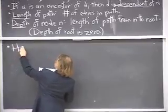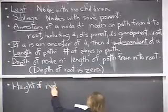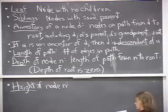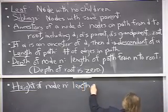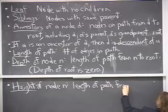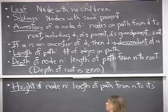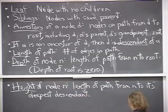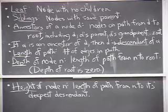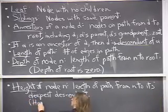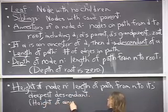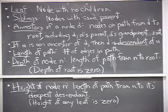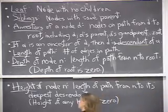The height of a node n is the length of the path from n to its deepest descendant. For example, the height of any leaf node is 0. Now that we've defined the height of a node, we can define the height of an entire tree, which is the height of the root.